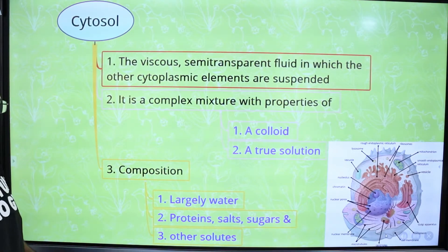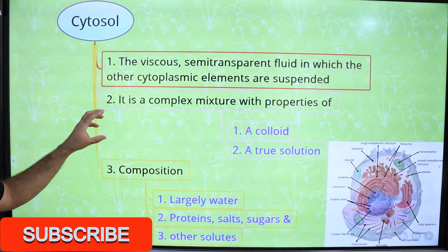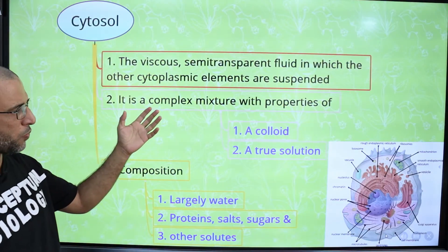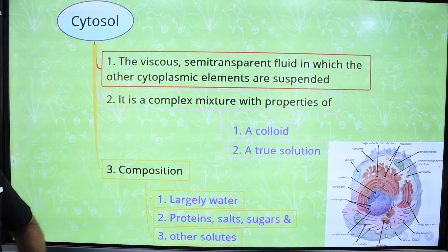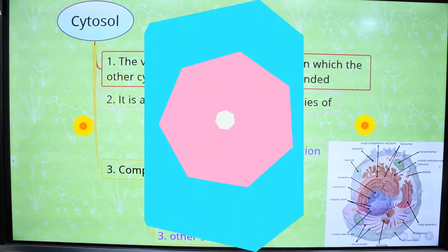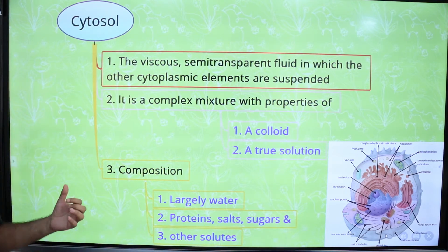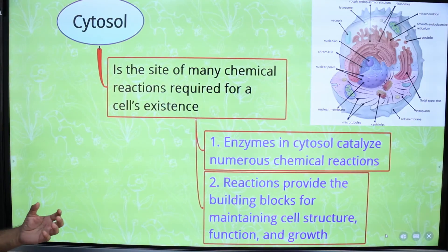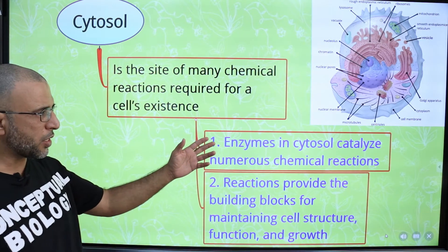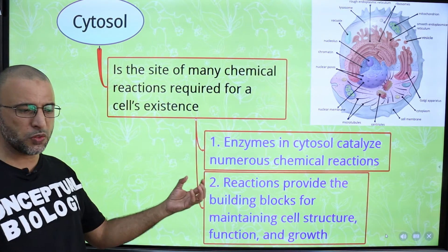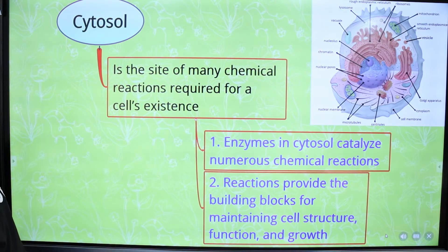What is cytosol? Cytosol is the viscous, semi-transparent fluid in which cytoplasmic elements are suspended. It is a complex mixture with properties of a colloid and a true solution. Its composition largely includes water plus proteins, salts, sugar, and other solutes. Cytosol is the site where chemical reactions take place, catalyzed by enzymes, providing the building blocks for maintaining cell structure, function, and growth.